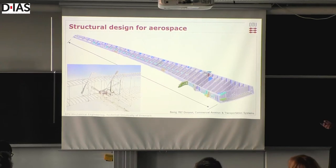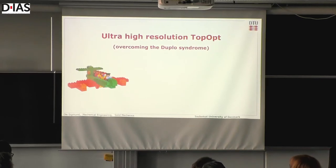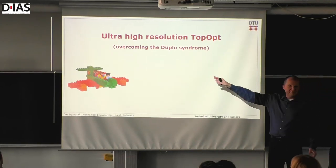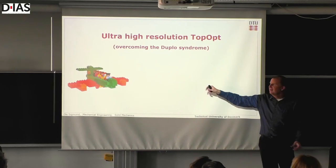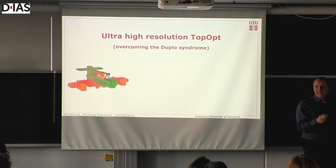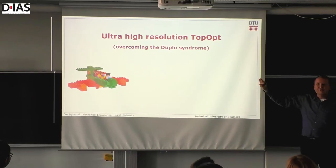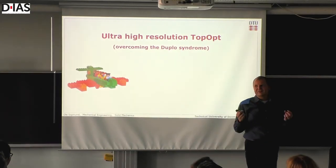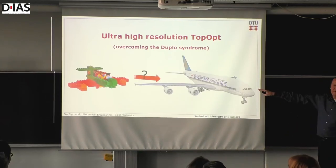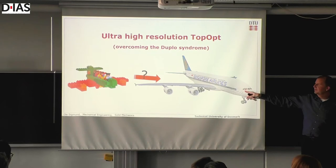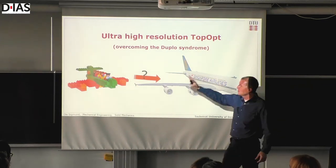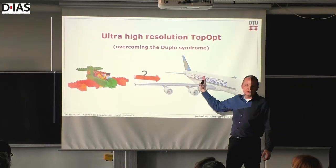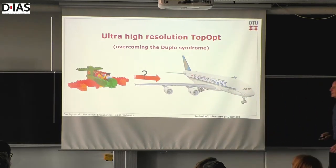We were stuck in what I call the Duplo syndrome — topology optimization was at the stage of Duplo just a few years ago. As a child you can do fantastic things with Duplo bricks, but at some point you see this doesn't really give us a good airplane structure. We want to shift to fine-resolution real Lego bricks to build a real airplane. Similarly, topology optimization was limited to fairly coarse resolution so far and we had to push it towards real Lego bricks.